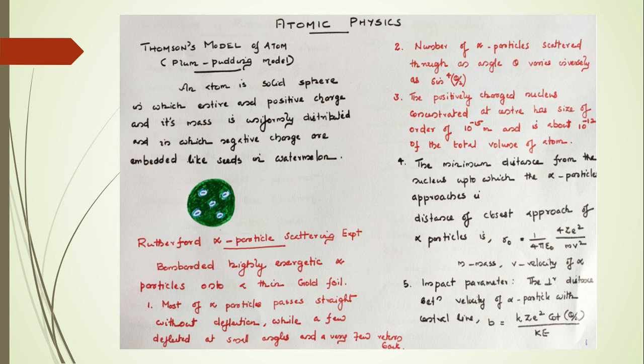Thomson's model of Atom is said to be the Plum Pudding model. Why is it called so? An atom is considered as a solid sphere in which the entire positive charge and its mass is uniformly distributed, in which the negative charges are embedded like seeds in a watermelon.